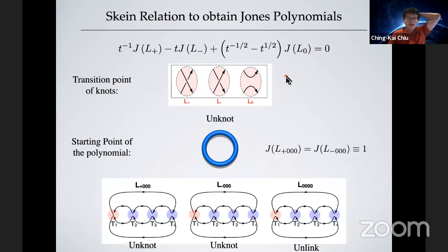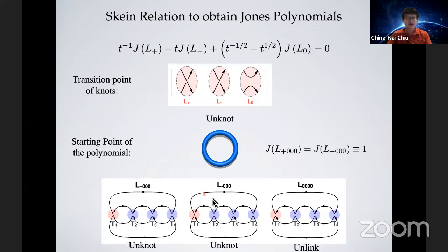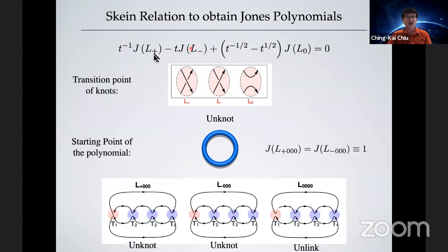Now let's talk about how we derive the Jones polynomial from a knot. It starts from the skein relation. The idea is: we use an example where a red point marks a specific crossing. These three diagrams are almost the same but differ only at that red crossing point, which can be distinguished as L-plus, L-minus, and L-zero. The skein relation tells you that the Jones polynomials of these three diagrams satisfy a relation: if we know two of them, we can get the remaining one.